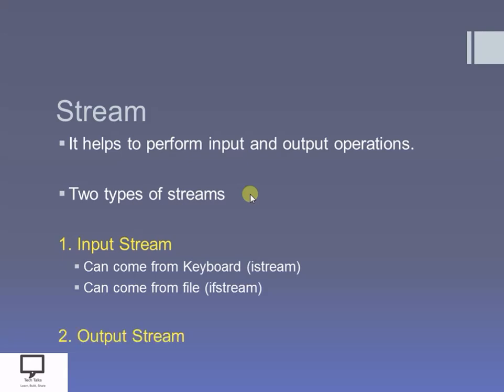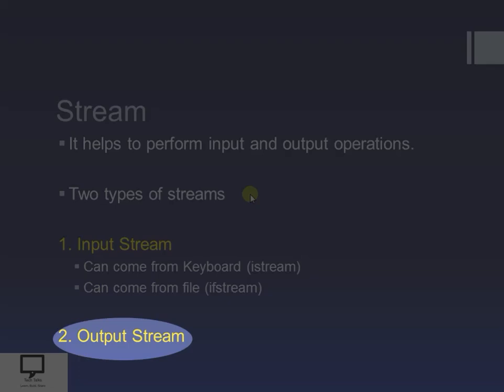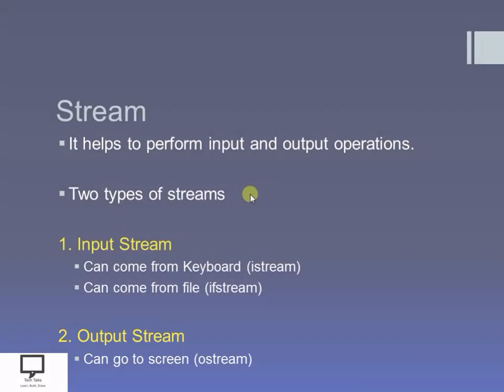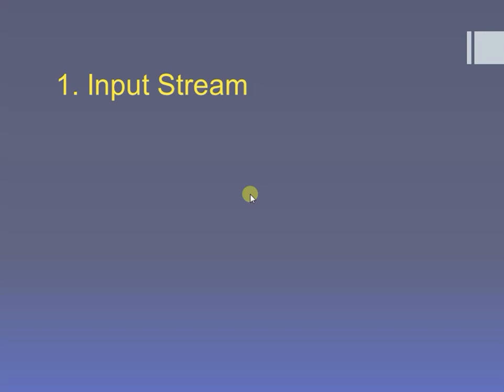The another type is output stream. The output goes to the screen using ostream, and the output can also go to a file using ofstream.